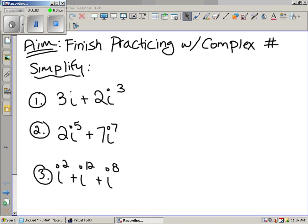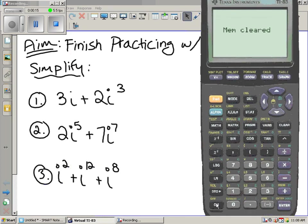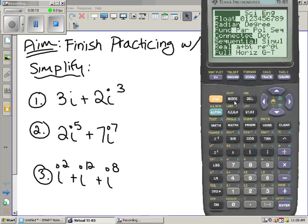Alright, so today we've got to finish practicing with complex numbers. The first part is we've got to simplify these three problems. Just the easy approach. How do you do these? Of course, calculadora. So let's break out our calculators. First, we've got to make sure our calculator's in the right mode. Instead of it being in the real mode, it's got to be in the A plus B I mode.